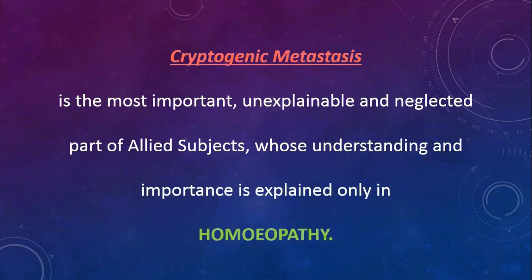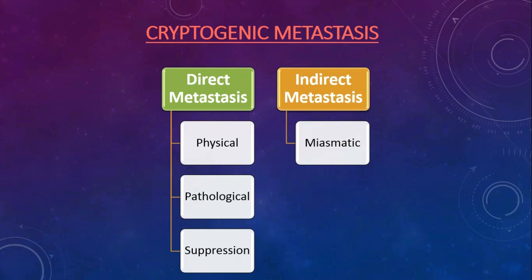The major component of anamnesis is cryptogenic metastasis, which means development of diseases of unknown origin. Cryptogenic metastasis is the most important, unexplainable and neglected part of allied subjects, whose understanding and importance is explained only in homeopathy. Classification of cryptogenic metastasis: first is direct and second is indirect metastasis. Direct metastasis has three parts — physical, pathological and suppression — and indirect metastasis has miasmatic part.